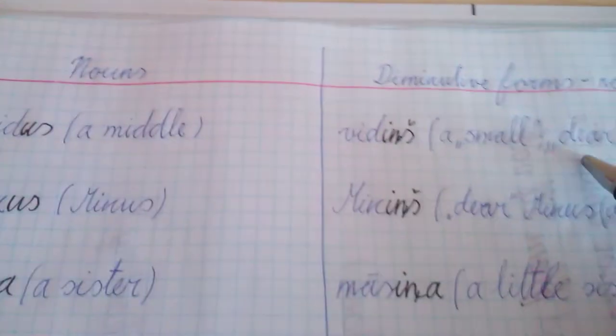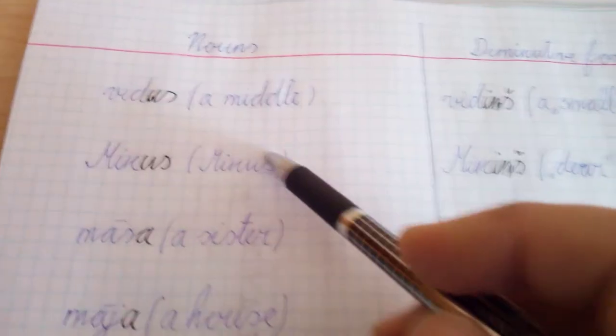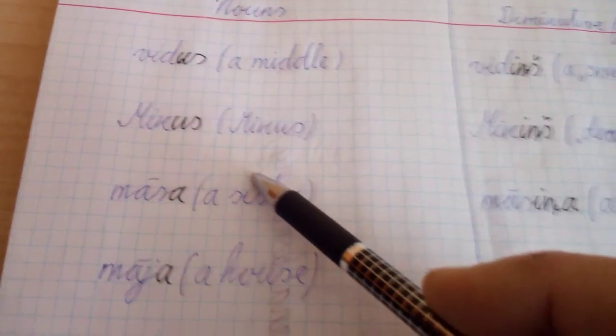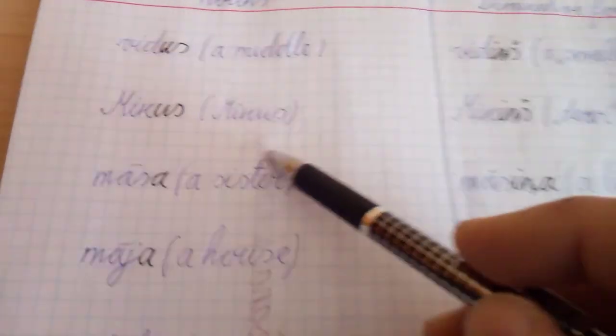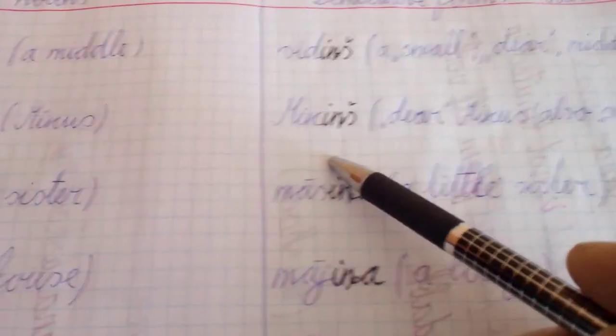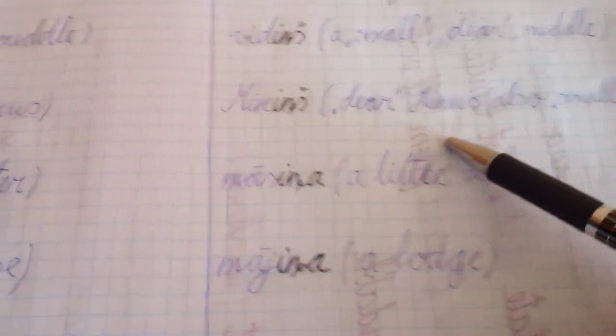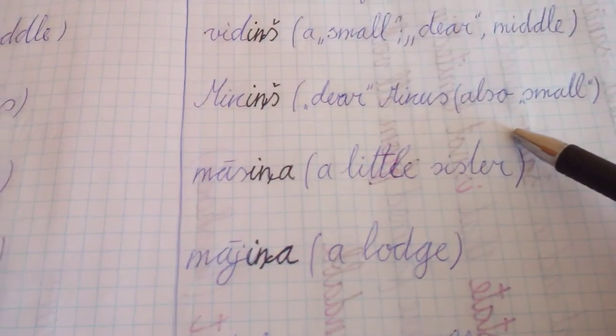Nouns, diminutive forms of nouns. Vidus, the middle. Vidinš, a small, dear middle. Mikus is the name of a man, and you can say dear Mikiņš - dear Mikus, also can be a small Mikus.